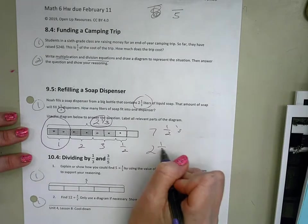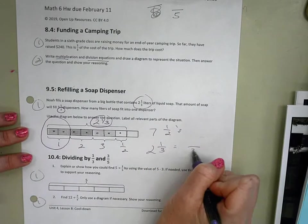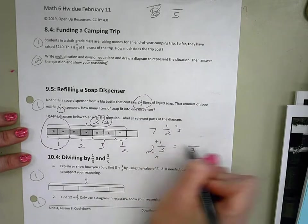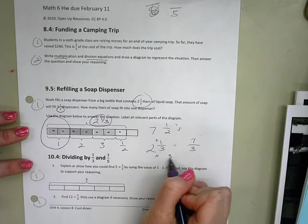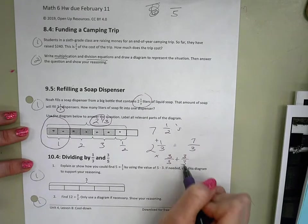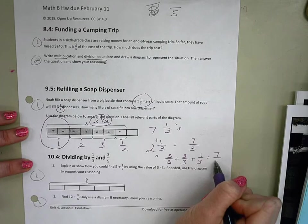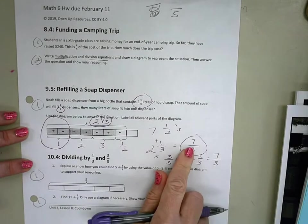So two and a third, this will really help if we make this into a fraction. Three times two is six, plus one is seven. Two is three thirds, right? Plus three thirds, that's one, that's two, plus one third, which is seven thirds. So I have seven thirds,